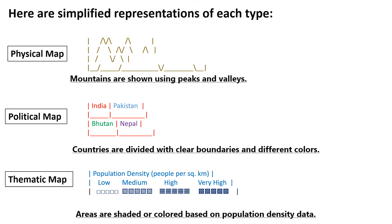Here are simplified representations of each type. I have explained these maps in a very easy way to understand using a simple graph. In the physical map, the graph shows mountains using peaks and valleys. In the political map, countries are divided with clear boundaries and different colors. In the thematic map, areas are shaded or colored based on population density data.